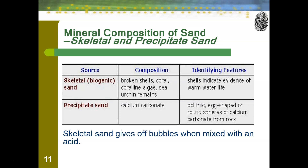Next, we have skeletal sand, sometimes called biogenic sand. This is what you're familiar with from the beach — it is made of broken shells, coral, coralline algae, and sea urchin remains. Its identifying feature is that it indicates you are near some sort of warm water life. Finally, we have precipitate sand, which is made of calcium carbonate. It is oolitic — meaning rounded, egg-shaped spheres of calcium carbonate from rocks. A cool fun fact: skeletal sand gives off bubbles when mixed with an acid.